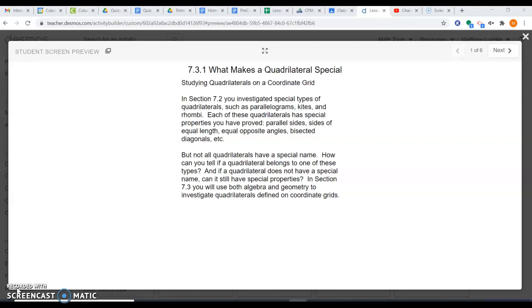We were writing flowchart proofs and two column proofs in that 7.2. Now what we're going to do here is evaluate some of these special features by looking at these on a grid.